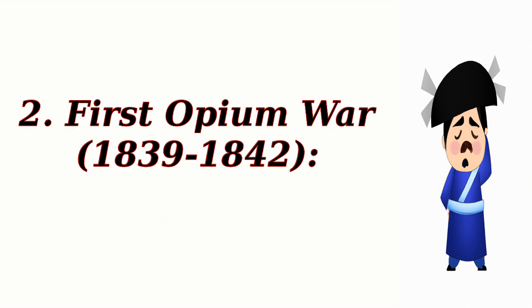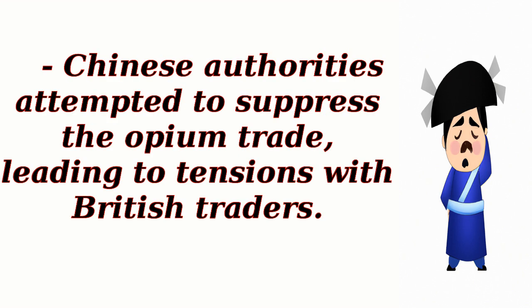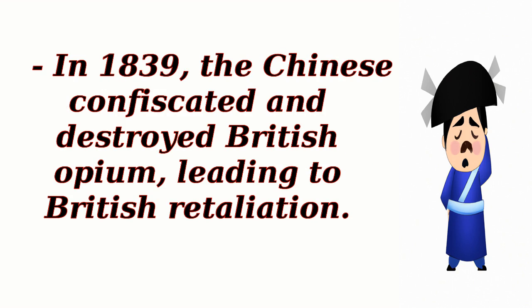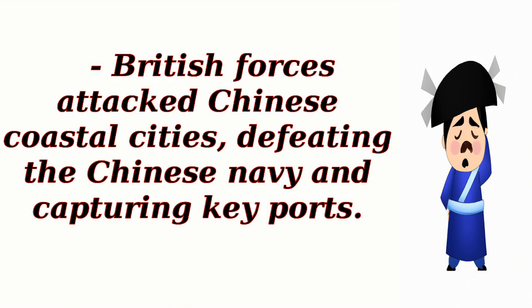First Opium War, 1839–1842: Chinese authorities attempted to suppress the opium trade, leading to tensions with British traders. In 1839, the Chinese confiscated and destroyed British opium, leading to British retaliation. British forces attacked Chinese coastal cities, defeating the Chinese navy and capturing key ports.